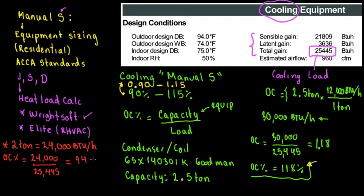Of course times 100. 94% so, technically this is passing. So, this complies with manual S based on ACCA standards. So, now the question to everyone, to the audience is which one would you choose? Option one or option two? Technically would you put in your house a two ton system or a 2.5 ton system?